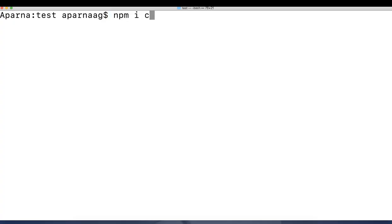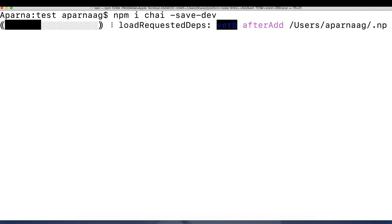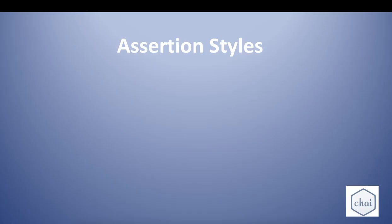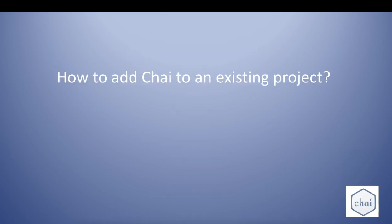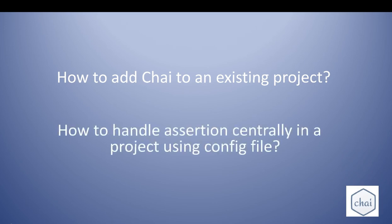We will also learn how to install Chai from terminal or command line interface. We will see the different assertion styles provided by Chai, which are assert, expect, and should. We will also cover differences, should extras, and configurations. Later we will see how to add Chai to an existing project and how assertions can be handled centrally in a project.